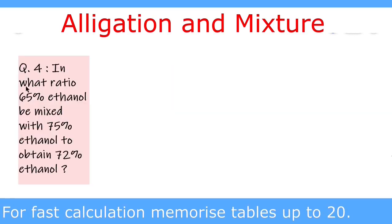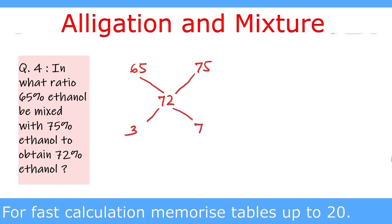Next question: In what ratio should 65% ethanol be mixed with 75% ethanol to obtain 72% ethanol? It is a very easy question — it makes no difference that values are given in percentage form; we still use the allegation rule. We write 65 on the left and 75 on the right, with mean value 72. Now 75 minus 72 is 3, and 72 minus 65 is 7. So the answer is 3 to 7 — we must mix the 65% solution with the 75% solution in the ratio 3 to 7.